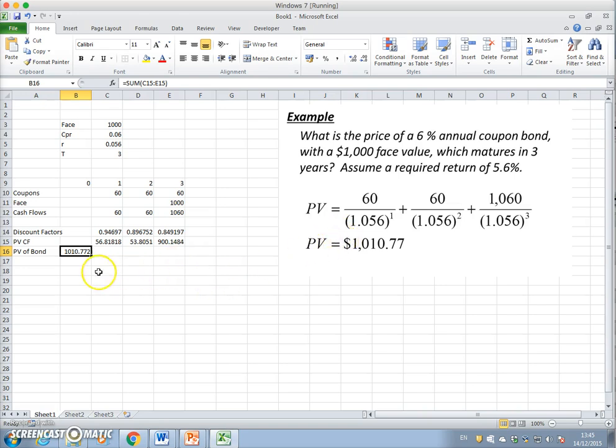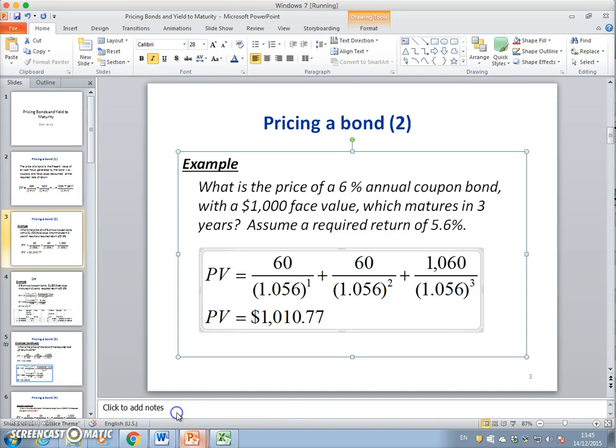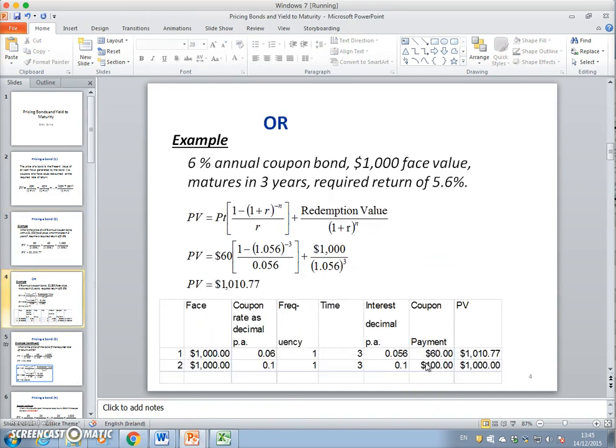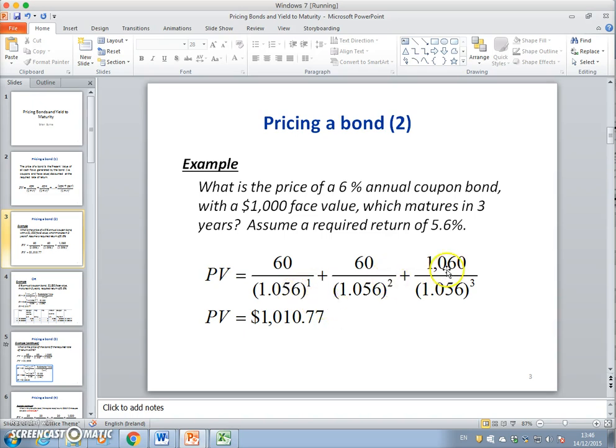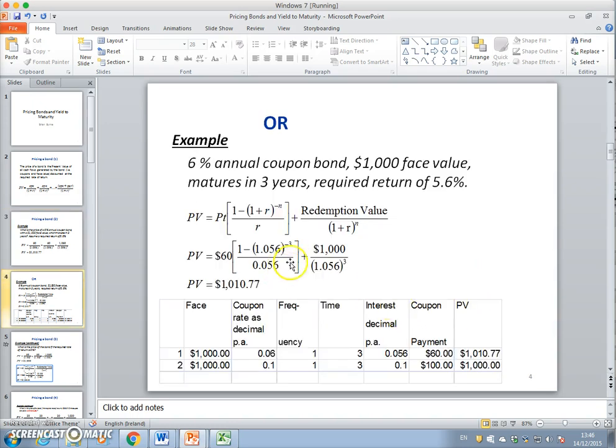An easier or more direct way of looking at this and making these calculations is to use the present value annuity factor. If we were to take this calculation - you could imagine if we made this for a 20-year period, discounting each cash flow over the 20-year period would be quite tedious. To streamline that, we can use a present value annuity factor.